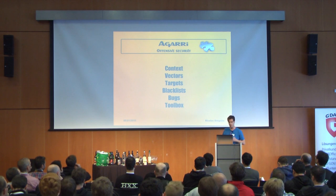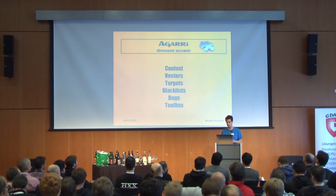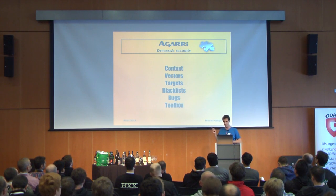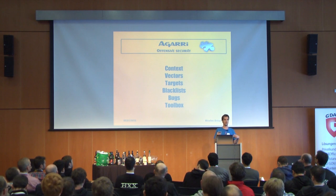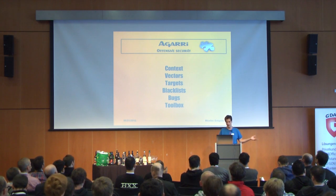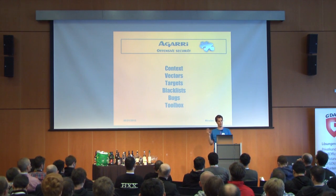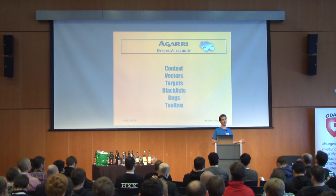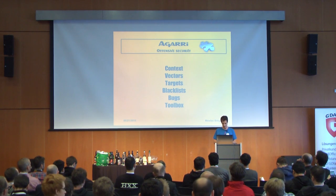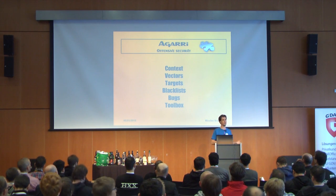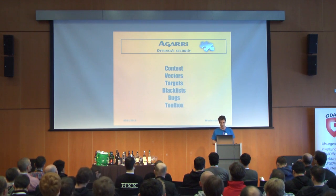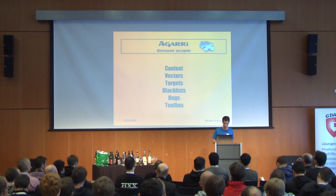I will give you some context: what did I try and where? Vectors — features we can use or abuse to browse URLs. Targets — destinations we want to reach. Blacklists — the most common protection measure you will meet. Bugs — real-life vulnerabilities from bug bounties. And then a quick overview of the toolbox.